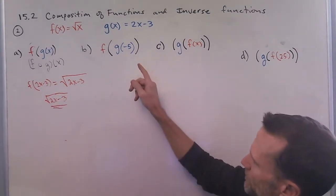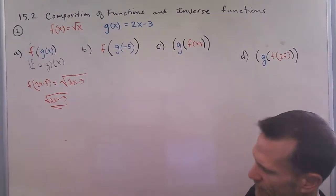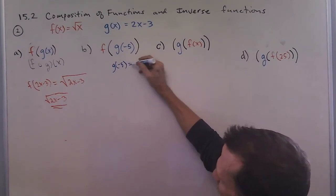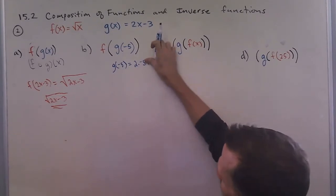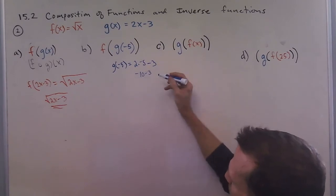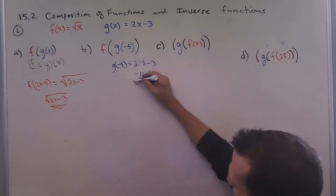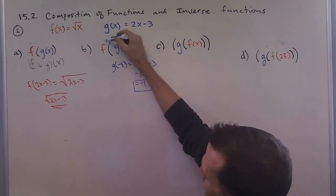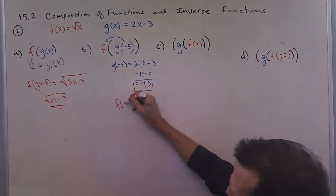Then taking a look at this one, we're going to compute g of negative 5. So we're going to put negative 5 in here. And so we'll do g of negative 5, the input value of negative 5. We have 2 times negative 5 minus 3. It's negative 10 minus 3. And we get negative 13. Okay. So we're going to take that value, since we know that's g of negative 5, and we're going to put that inside the f function.